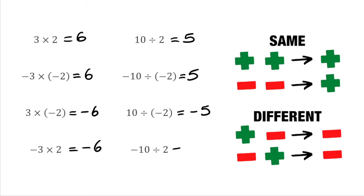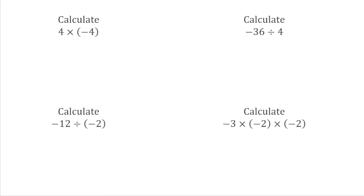Finally we have a negative divided by a positive. Again, because the signs are different, we're going to end up with a negative result, and 10 divided by 2 is 5, so that would be negative 5. We've now got a final few questions just to have a go at, so feel free to pause the video here and we'll go through the answers in just a few seconds.